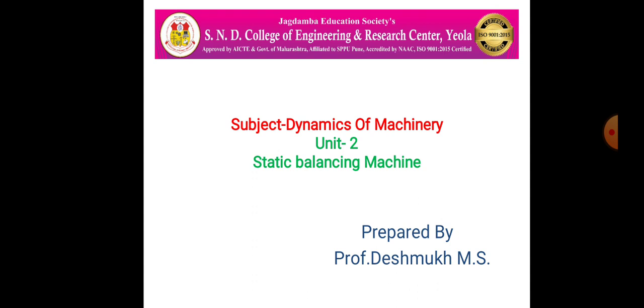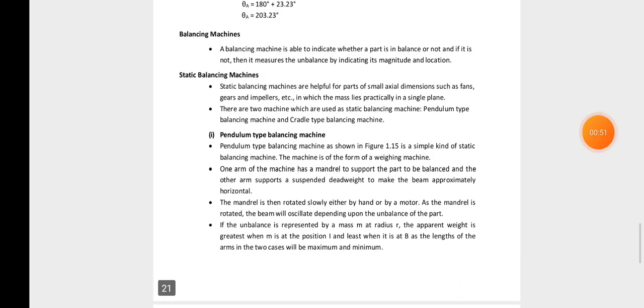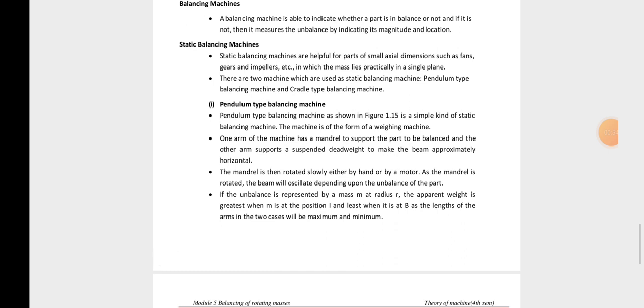In static balancing, only the forces acting on the system — that is, unbalanced forces — are made to balance. The balancing machine indicates whether the part is balanced or not, and if not, it measures the unbalance by indicating its magnitude and location. Balancing means the unbalanced mass should be equal to zero.